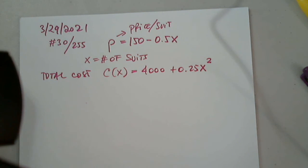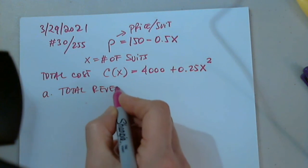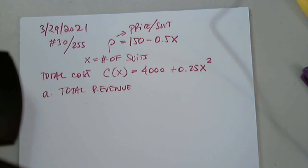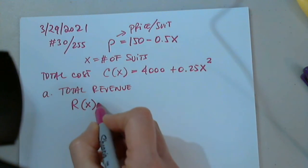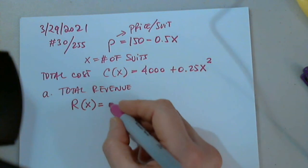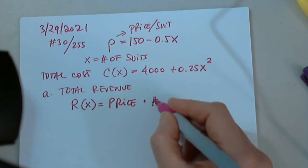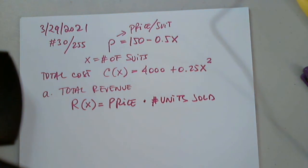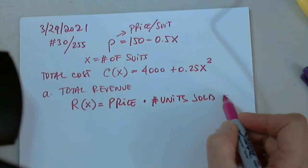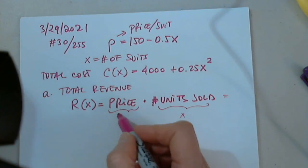Find the total revenue, part A, total revenue. How do I determine the total revenue? So, the total revenue is a function of X, right? It equals price times number of units sold. So, obviously, the number of units sold is X, and the price is our given P.